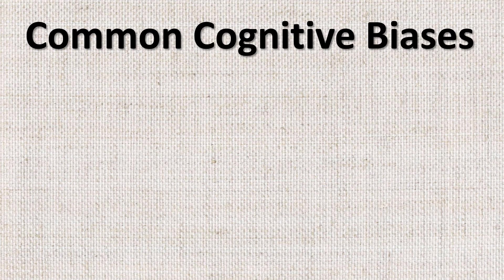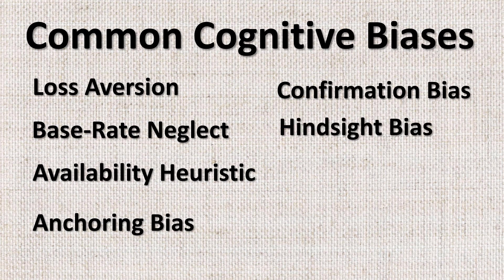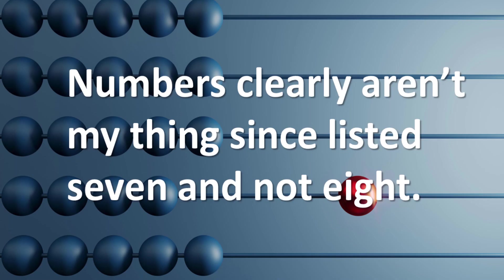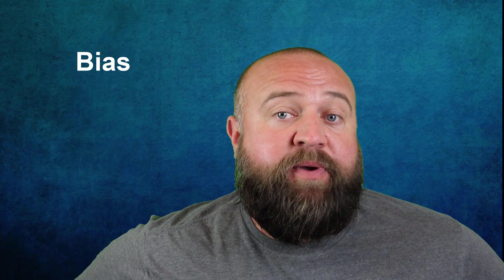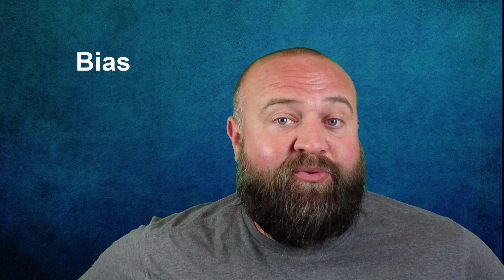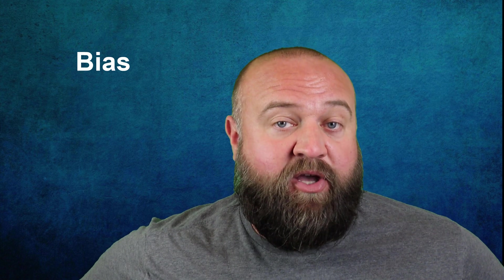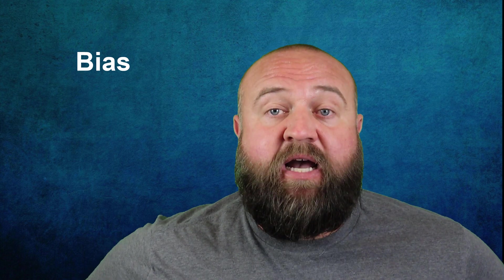The eight types of bias I'm going to talk about today are loss aversion, base rate neglect, availability heuristic, anchoring bias, confirmation bias, hindsight bias, and representative bias. As I go through each of these, I'll give a definition of the specific type of bias and at least one example so that it can help you better understand how the bias actually works. Keep in mind that while I'm going through many different types of bias, it is by no means all the biases that exist, but rather the most common ones.